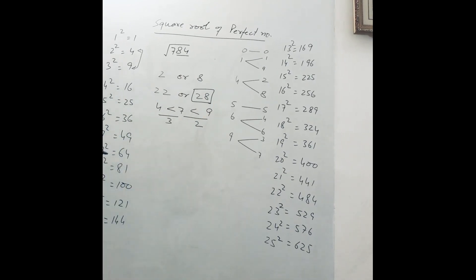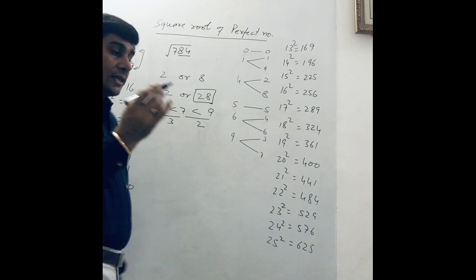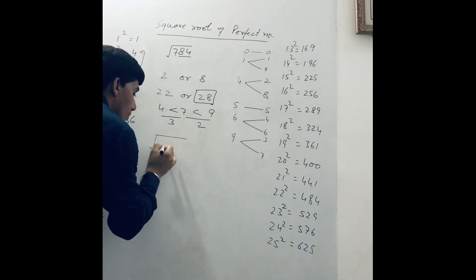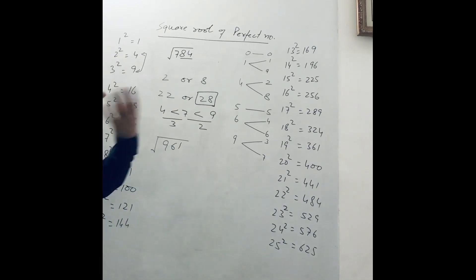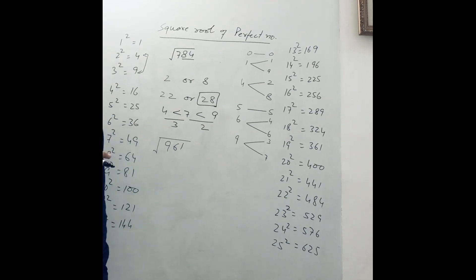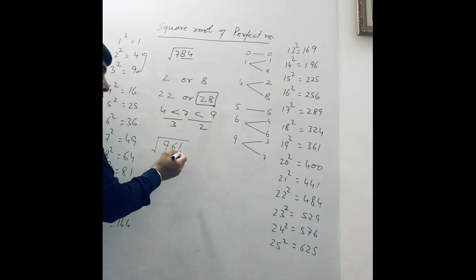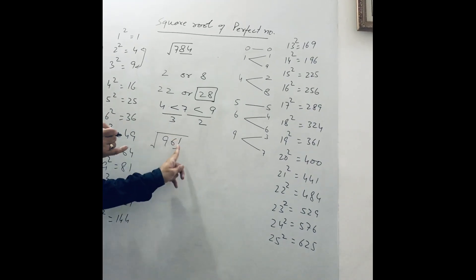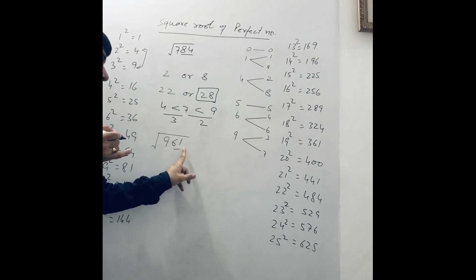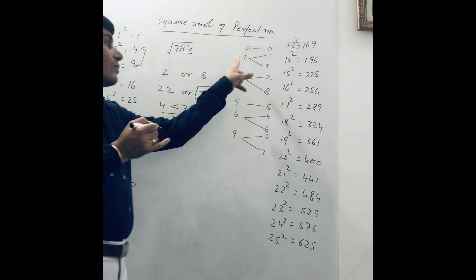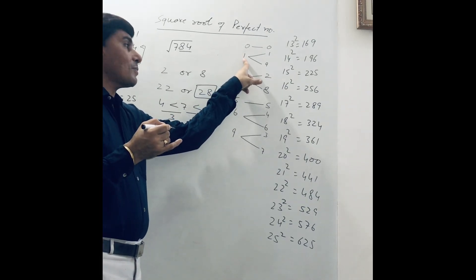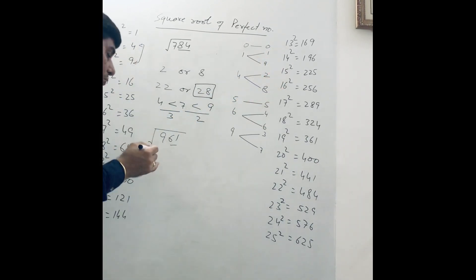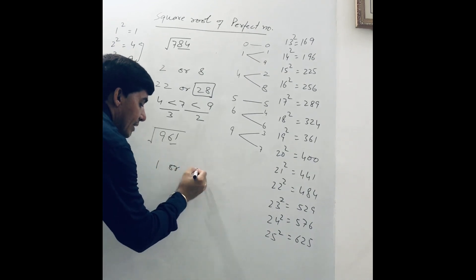We can take one more example. The next one is the square root of 961. Step by step: the first step is to pair the number from the back side — 61 is the pair. We see the last unit digit is 1. When the unit place is 1, then after finding the square root, the unit place may be 1 or 9. So we write 1 or 9.